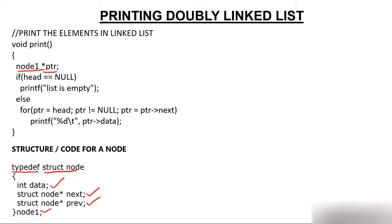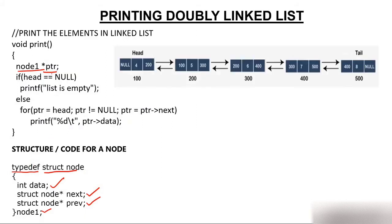Now let's understand — we have a doubly linked list and we have to print the element. First of all, I'll check: is there a linked list? If head is equal to null, I'll print 'list is empty'. Is head null? No, head is not null because there is 100 in head, so this will not get executed and I'll move to the else part.